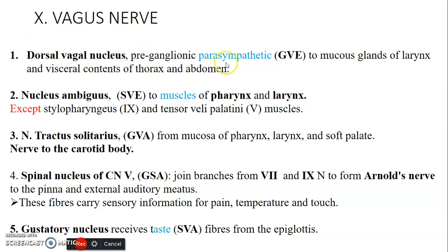The first one is the dorsal vagus nucleus. This provides preganglionic parasympathetic to the mucosa, pharynx, and viscera of the thorax and the abdomen — so the lungs, the heart, the bowel and the abdomen.